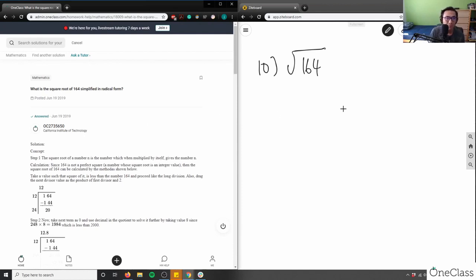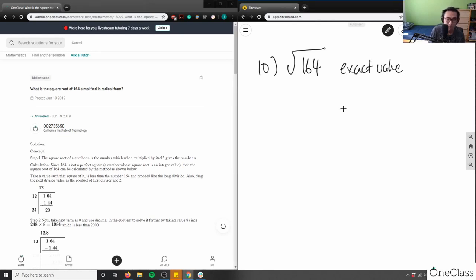So when we talk about simplified radical form, it's in exact value. So no decimal, I only want radicals and whole numbers in my solution.